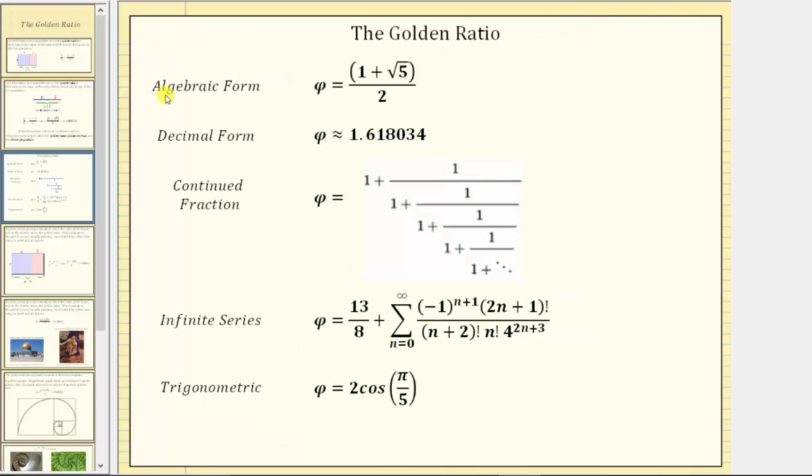There are several ways to express the golden ratio. Here we have the algebraic form, the decimal form. Here we have the golden ratio expressed as a continued fraction. Here's the golden ratio as an infinite series. And here's a golden ratio as a trig expression.